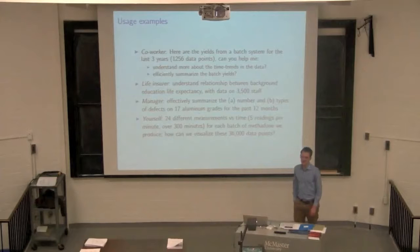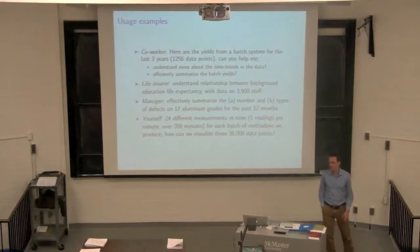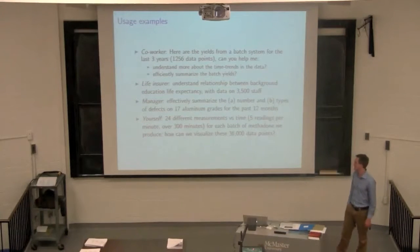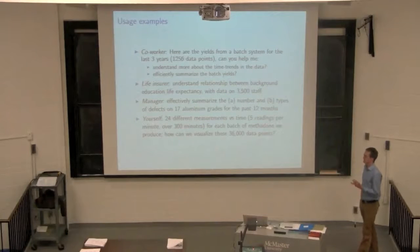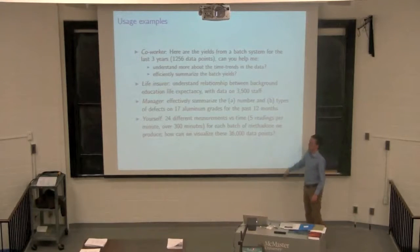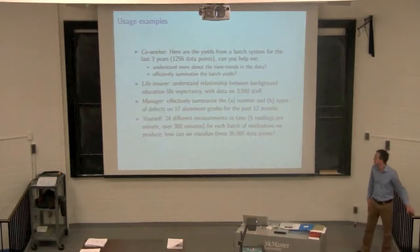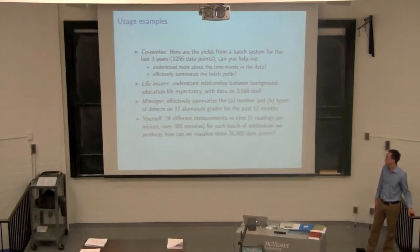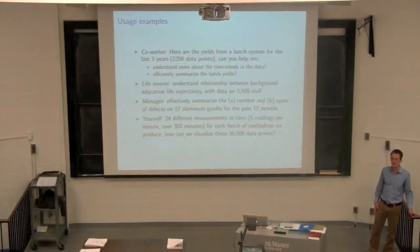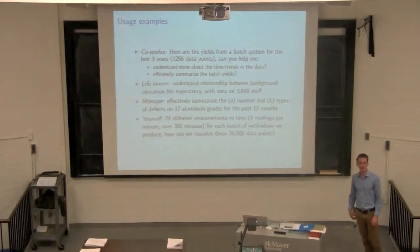Or you might be interested in plotting out the data from a batch. If you've got a batch producing methadone, you've got 24 measures taken against time — 300 minutes, five readings per minute. That's 36,000 data points. What are the effective ways of summarizing that sort of data?